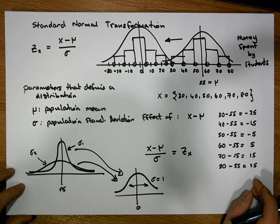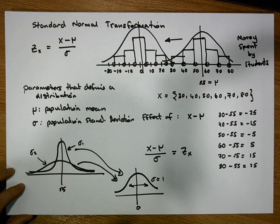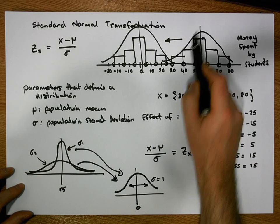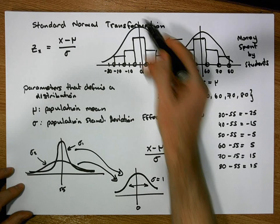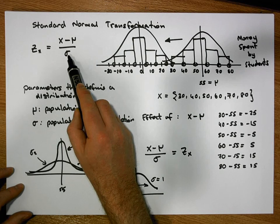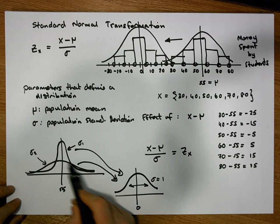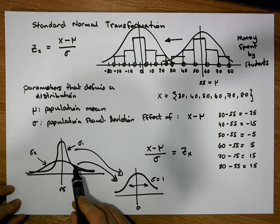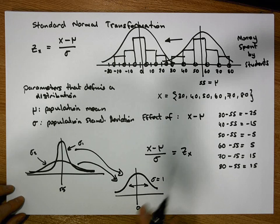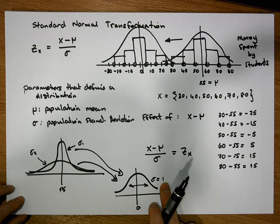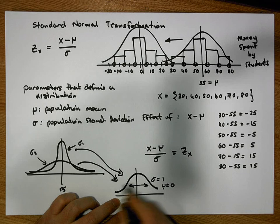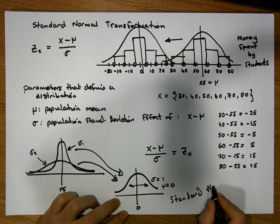To recap: the standard normal transformation has two components — a numerator and a denominator. The numerator shifts the population distribution down over zero. The denominator — dividing by the population standard deviation — eliminates the effect of the standard deviation, standardizing it so the resulting curve has a standard deviation equal to one unit.